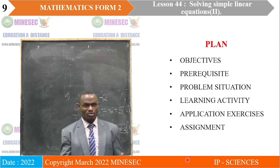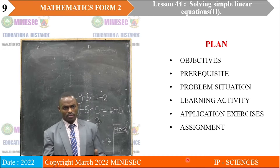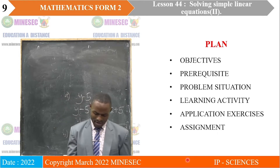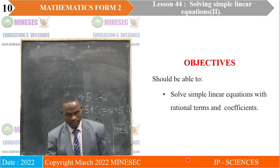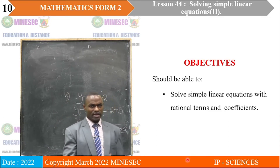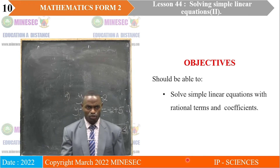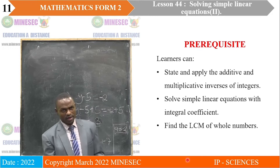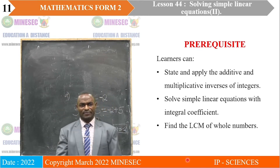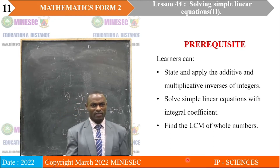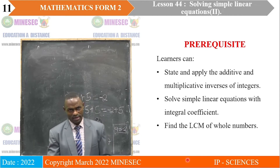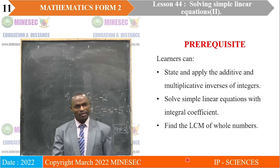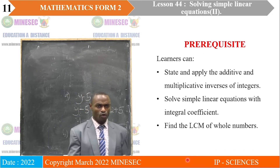As a plan for the lesson, we'll begin with the objectives, prerequisites, problem situation, learning activity, application exercises, and we'll end with an assignment. The lesson objective is that at the end of this lesson, you should be able to solve simple linear equations with rational terms and coefficients. As a prerequisite, learners can already state and apply the additive and multiplicative inverses of integers, solve simple linear equations with integral coefficients, and find the LCM of numbers.